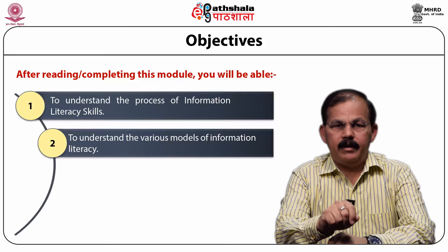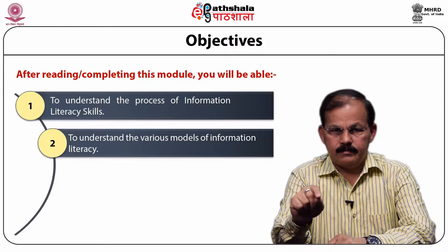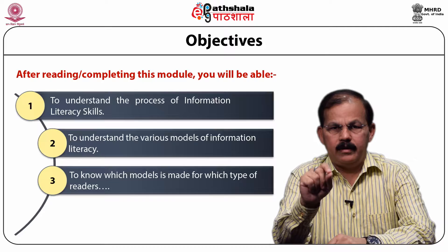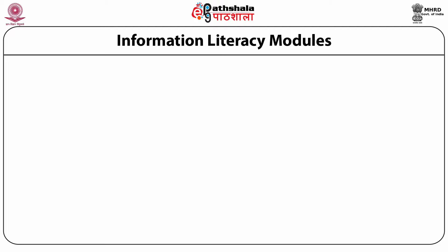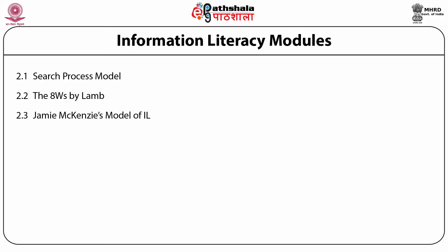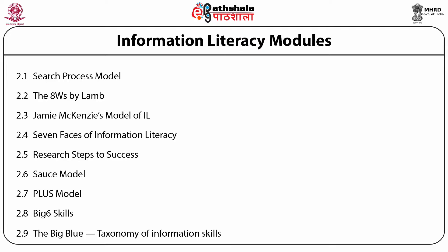In this module, we will discuss the various models of information literacy developed by individuals. The objectives include understanding the process of information literacy skills, understanding how information literacy can develop lifelong learning, and understanding various models such as the search process model, eight W's model, Jamie McKenzie's model, seven phases of information literacy, research steps to success, source model, PLUS model, Big Six skills model, and the Big Blue taxonomy of information skills model.